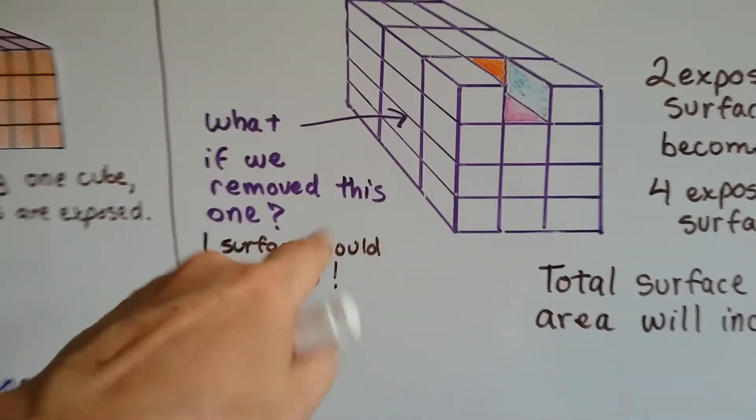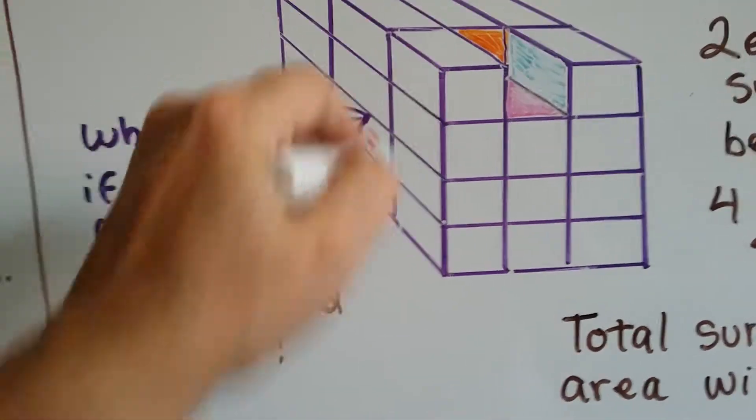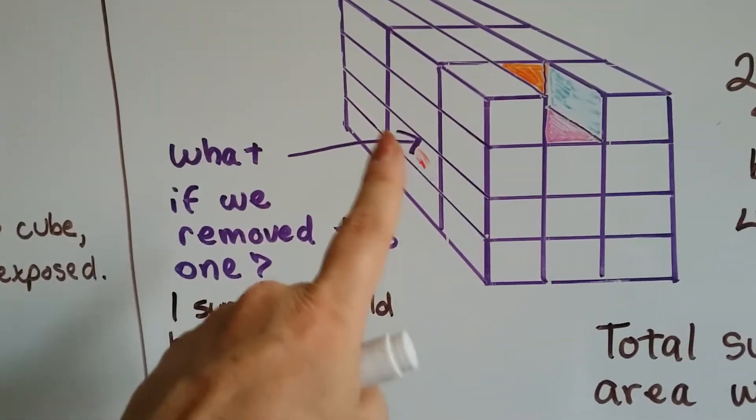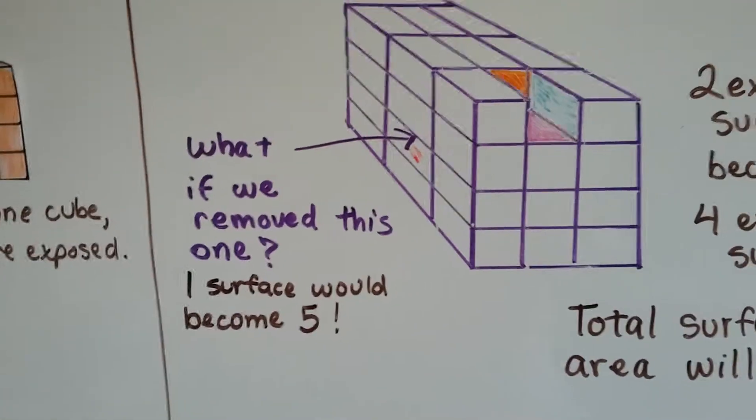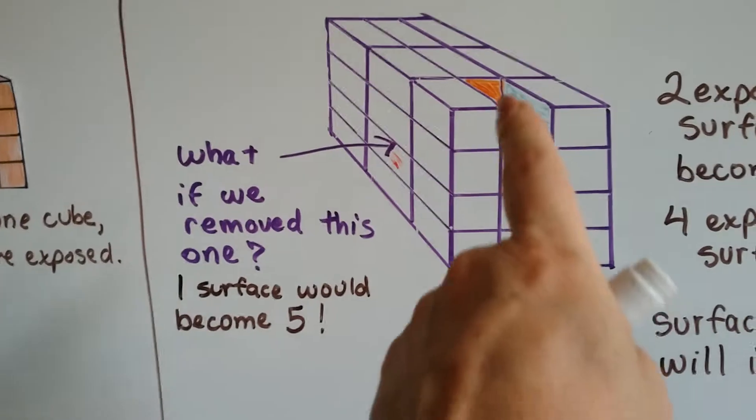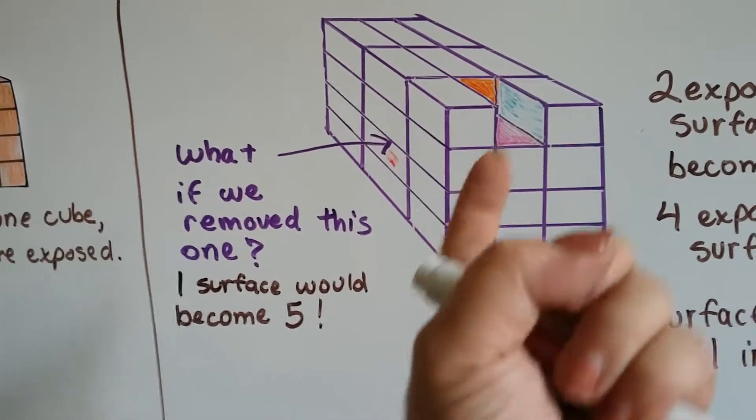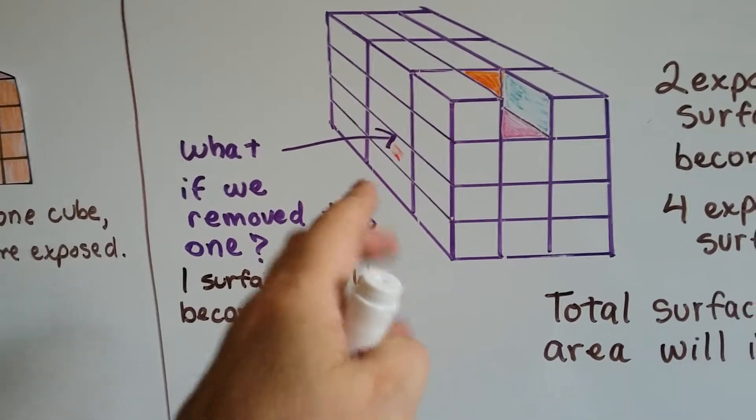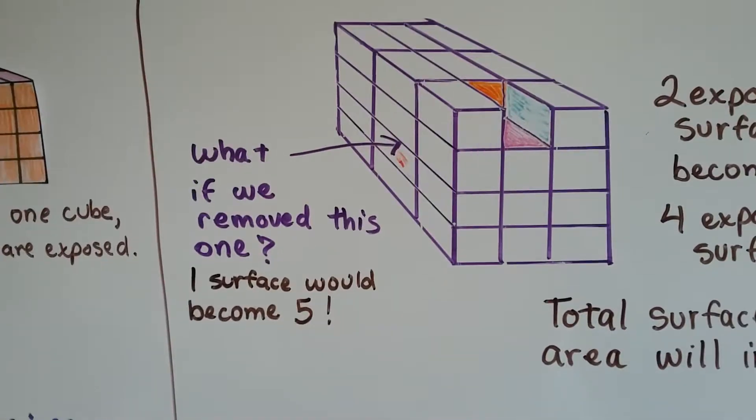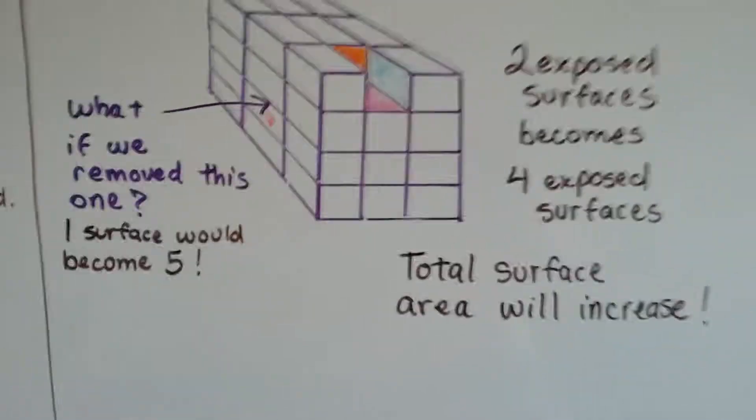What if we took out this cube right here? Right now it's one surface area. But if we remove it, we're going to create five surface areas, because not only would it have the four that this one has, but it would have a roof like a little cave. And it would be exposed and it could be touched, so it would be considered surface area.